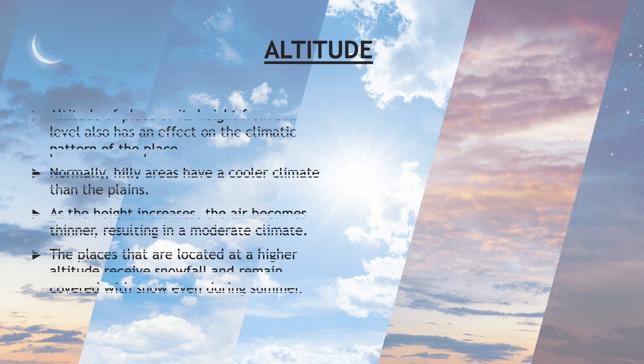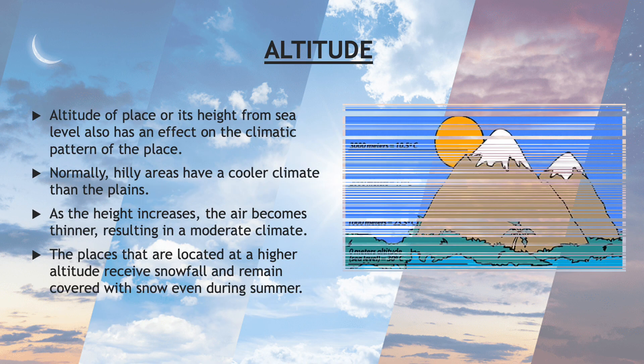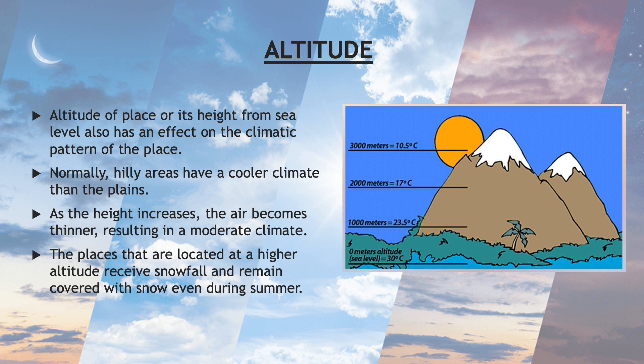Let's talk about altitude. Altitude of a place, or its height from the sea level, also has an effect on the climatic pattern of the place. Normally, hilly areas have a cooler climate than the plains.